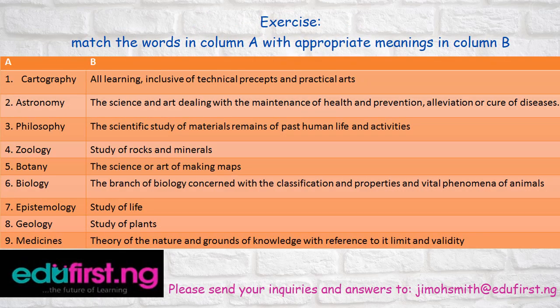Exercise: students should match the words in column A with appropriate meanings in column B. Number one: cartography — all learning inclusive of technical precepts and particular arts. Number two: science — the science and art dealing with the maintenance of health and prevention, elevation, or cure of diseases. Number three: philosophy — the scientific study of materials and remains of past human life and activities. Number four: zoology — study of rocks and minerals. Number five: botany — the science or art of making maps. Number six: biology — the branch of biology concerned with the classification and properties and vital phenomena of animals.